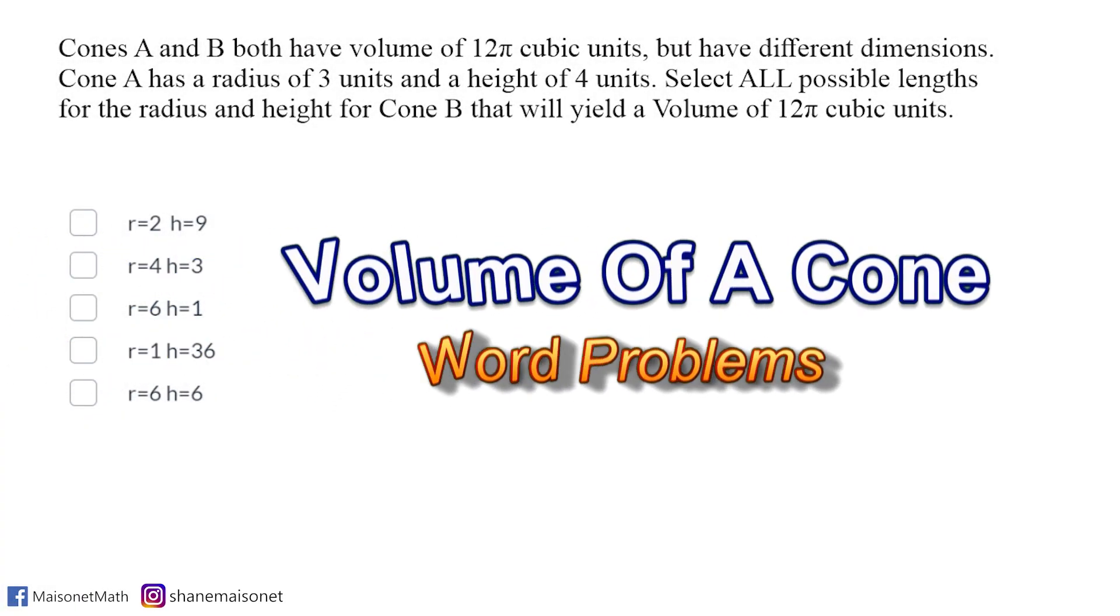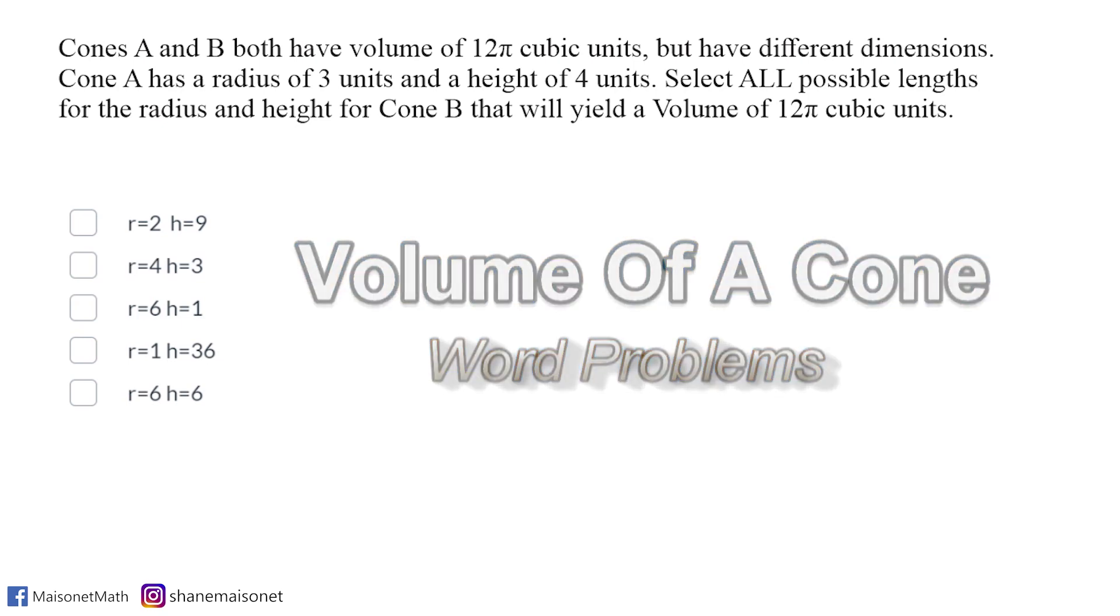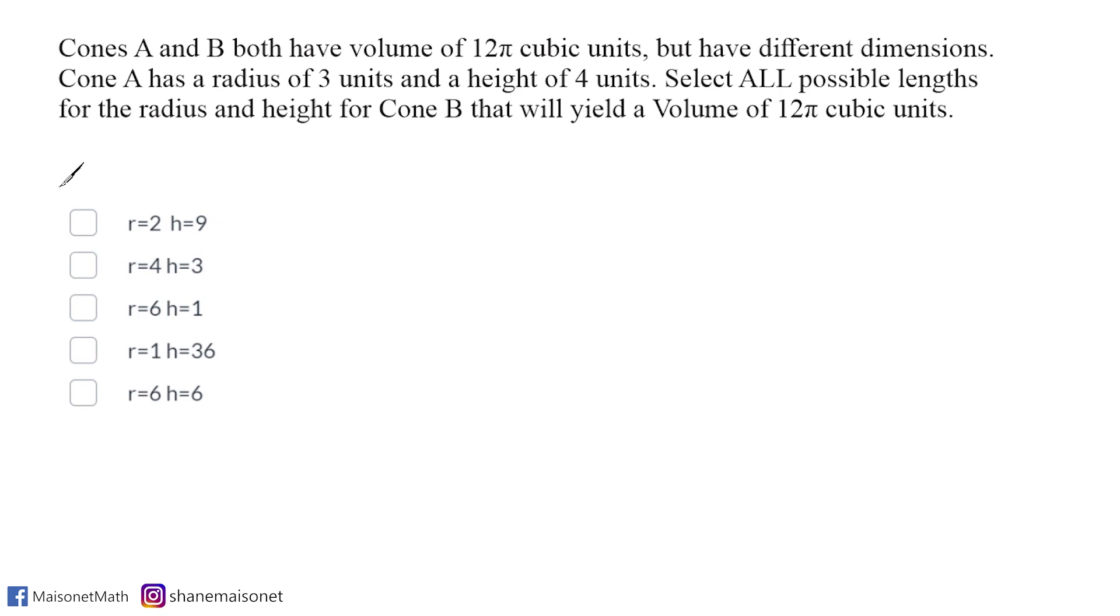What we have here is a word problem involving the volume of cones. Let's read it and see what we have to do to solve. The problem reads that cones A and B both have a volume of 12π cubic units but have different dimensions. Cone A has a radius of 3 units and a height of 4 units. Select all possible lengths for the radius and height for cone B that will yield a volume of 12π cubic units.